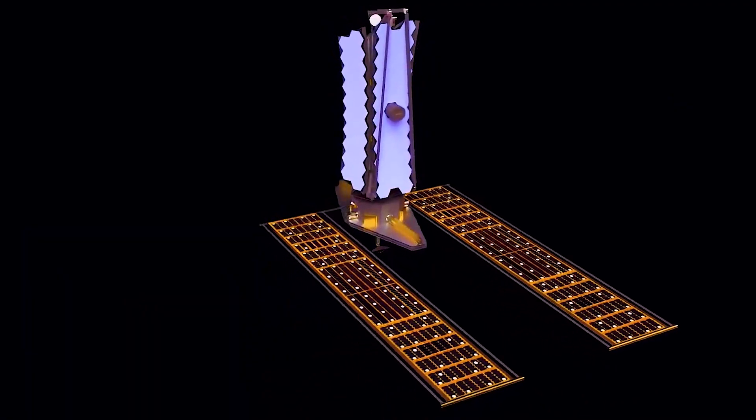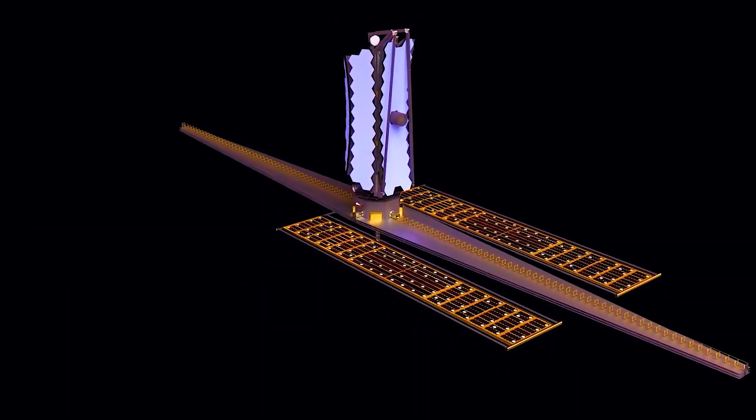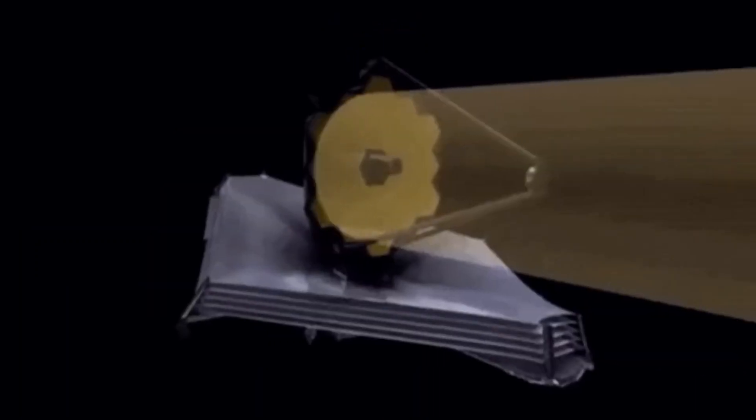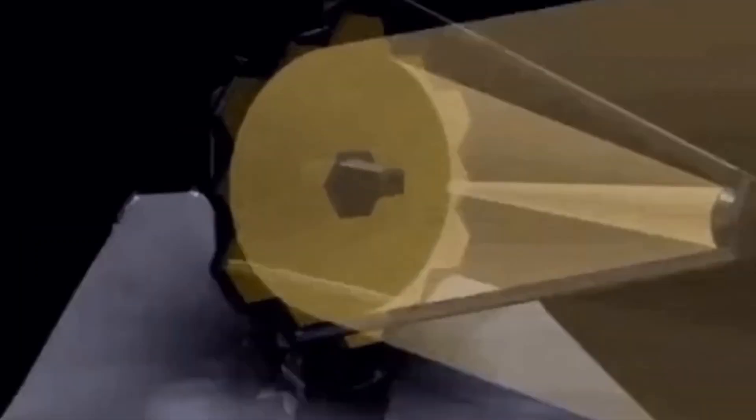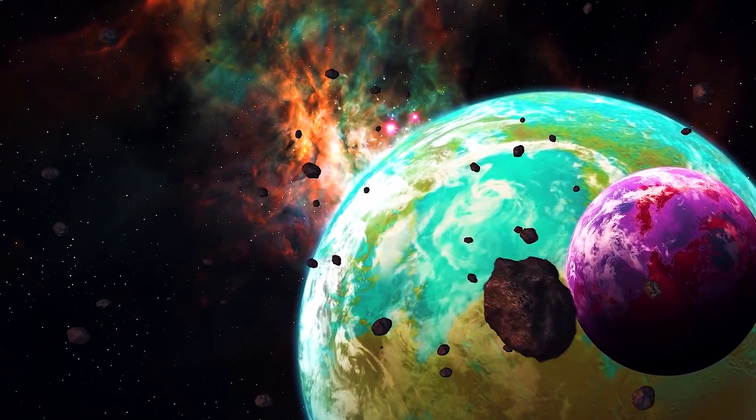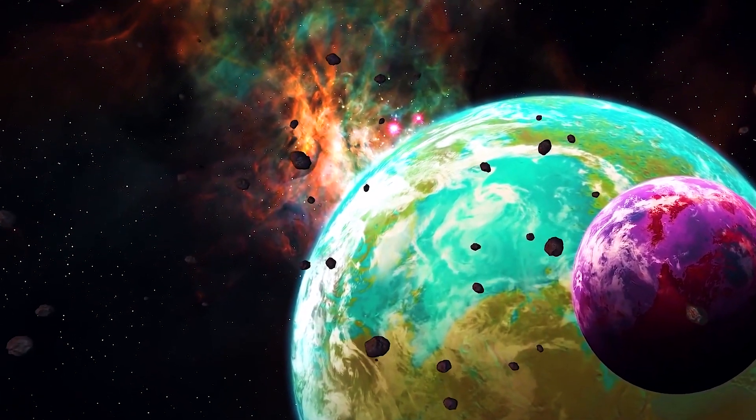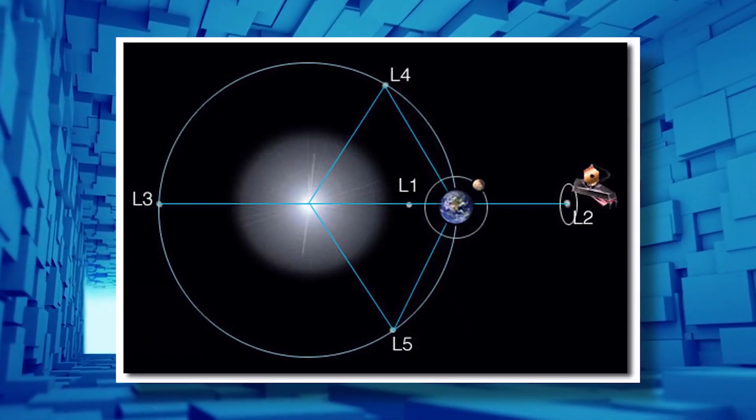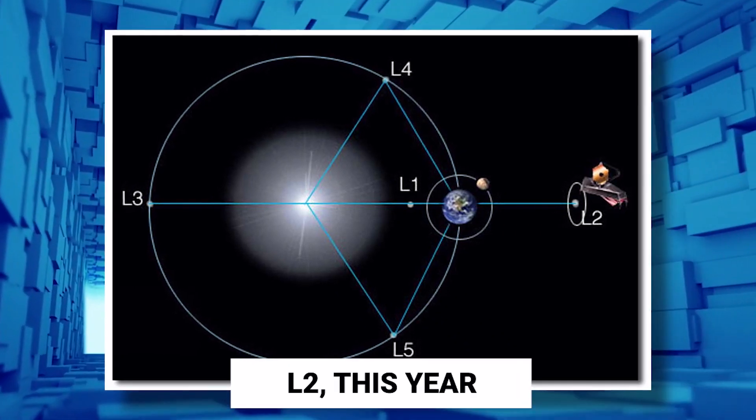Before we dig into the latest discovery, let us first get a glimpse of the background of the James Webb Space Telescope. Webb, to date, is the most complex telescope ever built and reached its final destination around gravitational special spot in space known as the second Lagrange point or L2 this year.